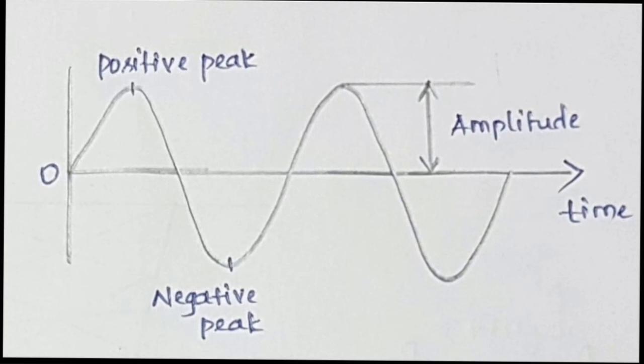We apply AC voltage to the diode circuit. With AC voltage, you can have both positive and negative voltage cycles. We place the diode in the circuit. During the positive half cycle, the diode gets forward biased and allows current to pass. During the negative half cycle, the diode becomes reverse biased and blocks current.